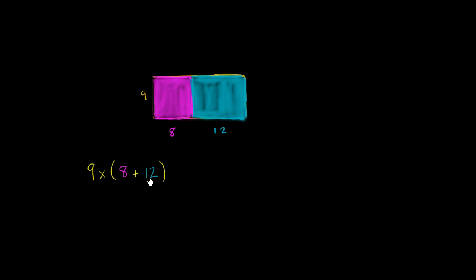But the other way that we could do it, and this must be equivalent because we're figuring out the area of the same thing, is to separate out the area of these two sub-rectangles. So let's do that. And this must be equal to this thing.